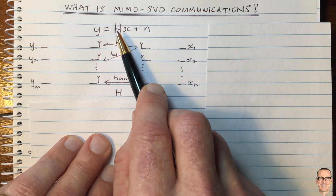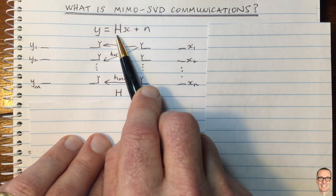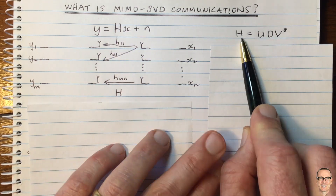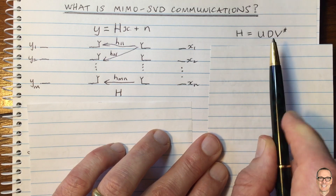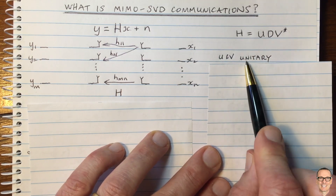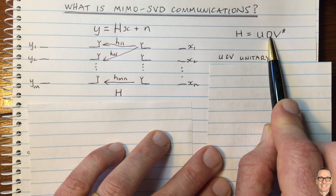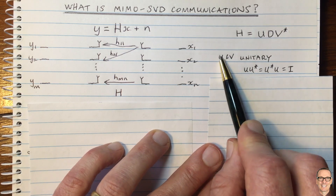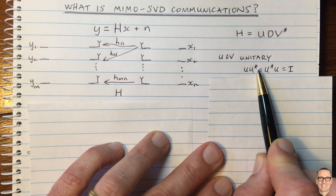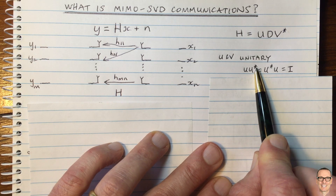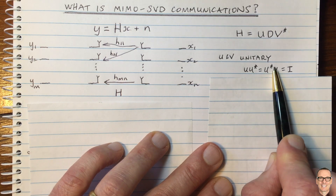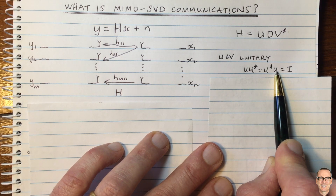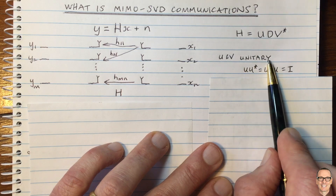Let's think about the singular value decomposition of H and see if that can help us. We have a decomposition of H called the singular value decomposition, where U and V are unitary matrices and D is a diagonal matrix. What does unitary mean? It means that U times U-star, the complex conjugate transpose, equals U-star U, which equals the identity. So U-star is the inverse of U — that's a special property of unitary matrices.